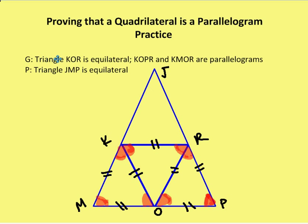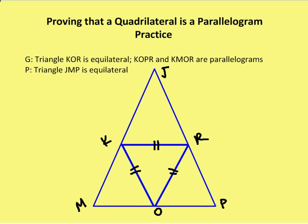We've marked up the diagram here. We're given that triangle KOR is equilateral, so I've marked up the dashes. KOR is equilateral, so all the sides of KOR are congruent. We talked about how when all the sides are congruent, the angles are also congruent, so it's an equilateral and equiangular triangle — meaning angles RKO, KOR, and ORK are all congruent. We also know that KOPR and KMOR are parallelograms, which means the opposite sides are congruent.